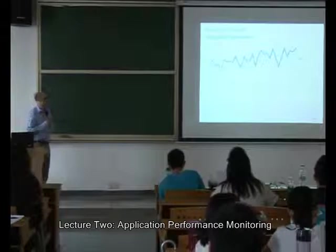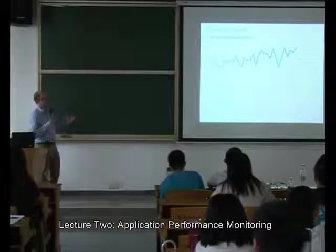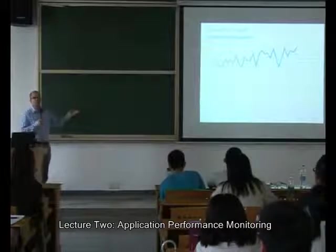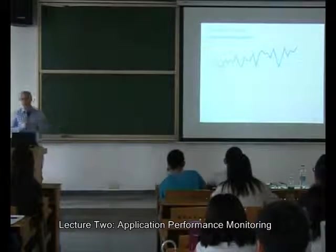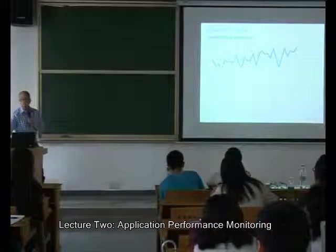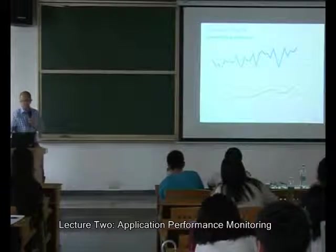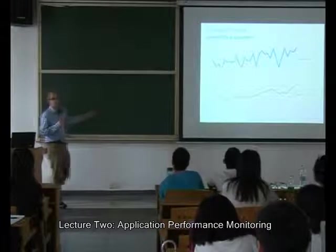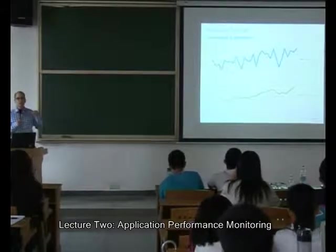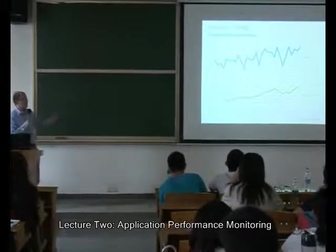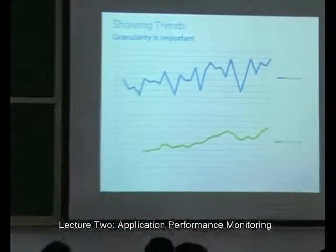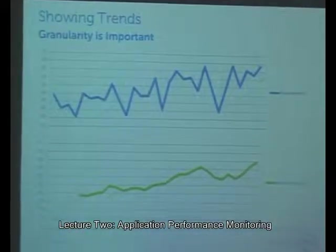Here's an example of a metric graphed over time. It's simple, but the granularity is important. If this is going up, you can kind of tell — but if you summarize with a different granularity, you get a more obvious trend. Instead of raw data at whatever interval, we summarize it and take a moving average. Now it's much more obviously growing.